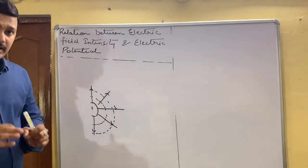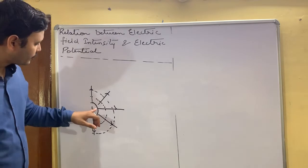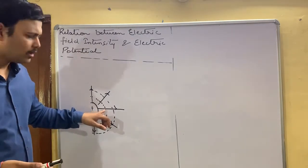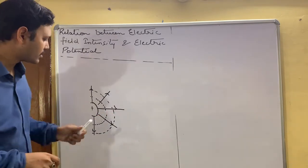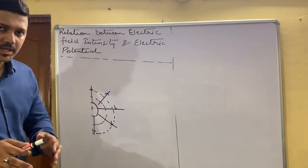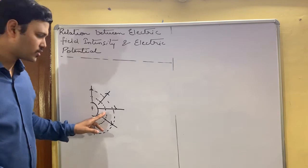Our aim is to move a test charge from this surface to this surface, whichever you like. So this is the first equipotential surface, this is the second equipotential surface. We are trying to move a test charge from first equipotential surface to second equipotential surface.